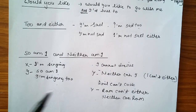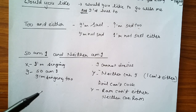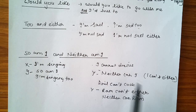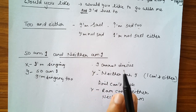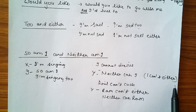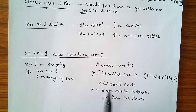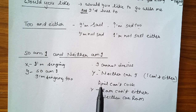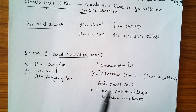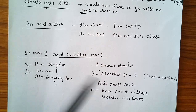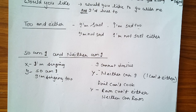'Neither am I' is used for negative agreement. If I say 'I cannot try,' you respond 'Neither can I' or 'I cannot either' — both are correct. For example, if Anil cannot cook, we can say 'Ram cannot either' or 'Neither can Ram.' You should practice: 'I cannot drive — neither can I' or 'I cannot either.'